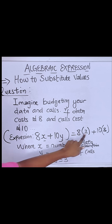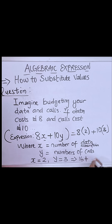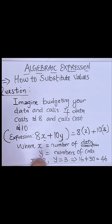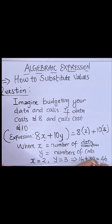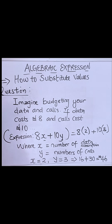Okay so 8 times 2 is 16. 10 times 3 is 30. So when we add this up we have 46 Naira. When you are trying to plan ahead for a budget, this is what it will cost you. It will cost you 46 Naira to do this successfully in a month.